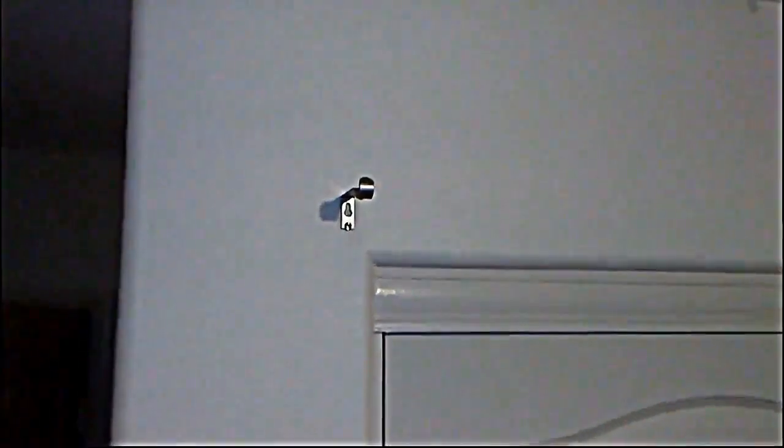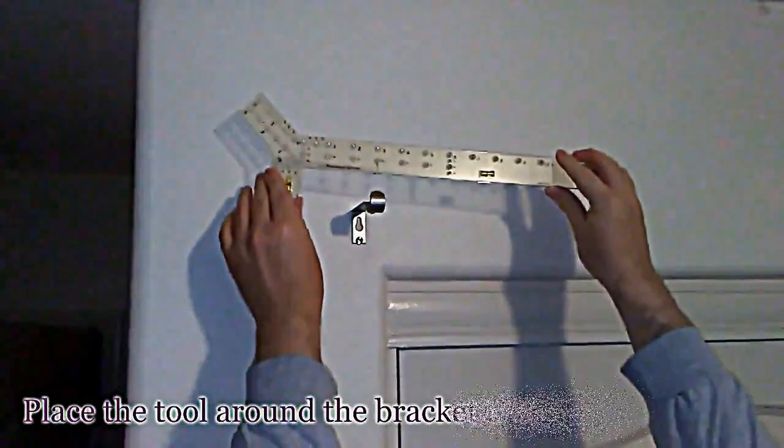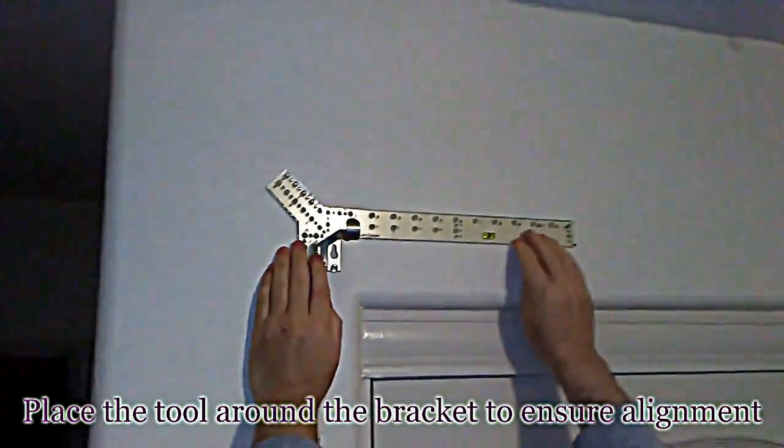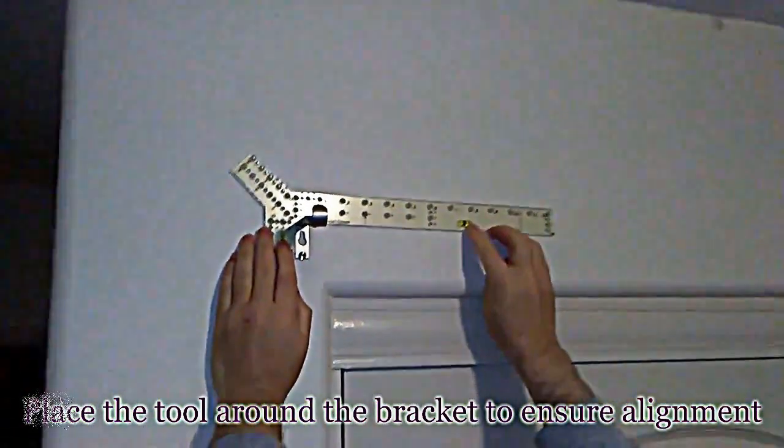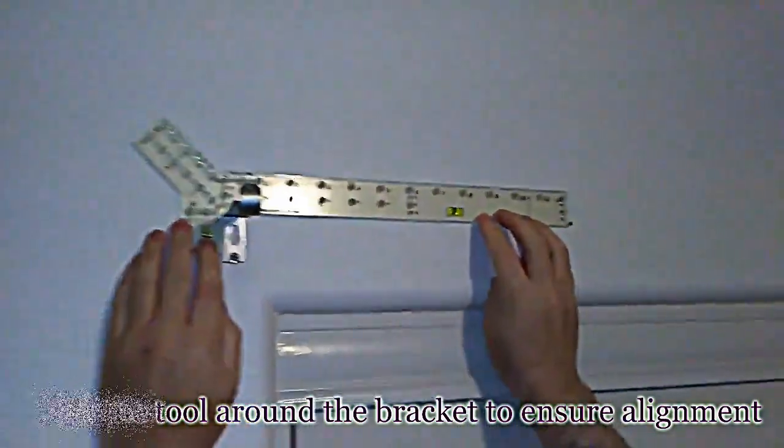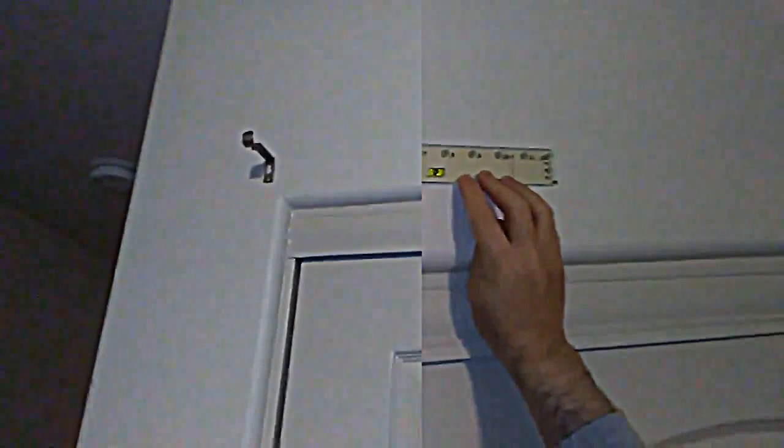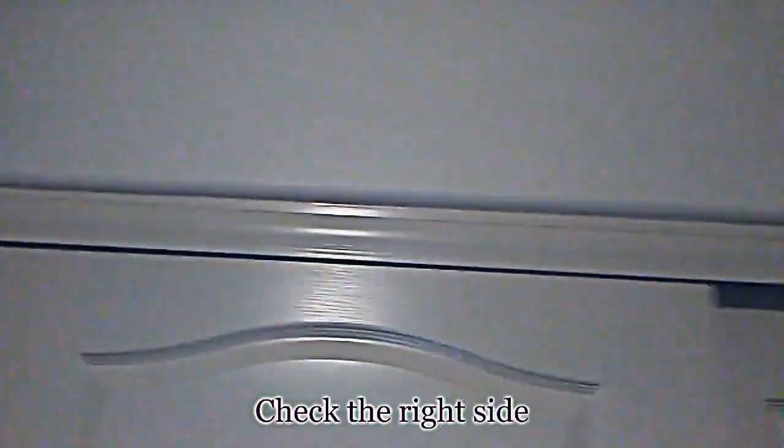After mounting the bracket, place the tool on the bracket at a 90 degree angle and look at the level of alignment. Make sure the level is centered, and in this case it's centered. After done installing the bracket on the left side, make sure you do the same thing on the right side. Then you mount the curtain rod.